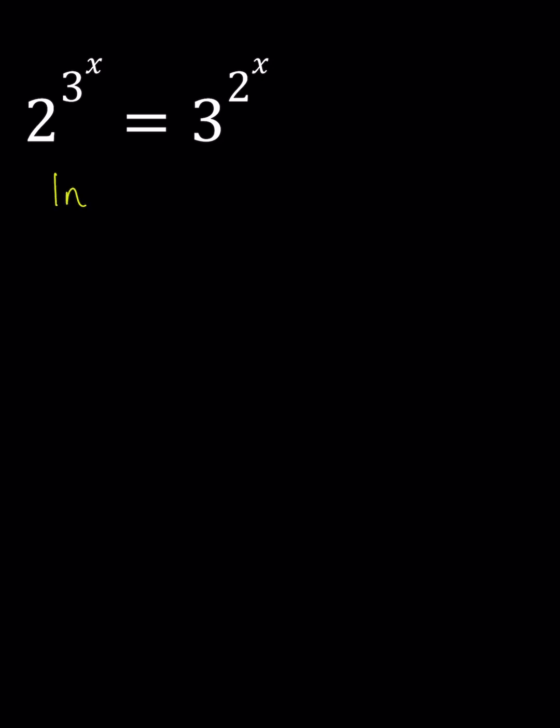Let's ln both sides. And now this brings the powers down, so we can write this as 3 to the x ln 2 equals 2 to the x ln 3.